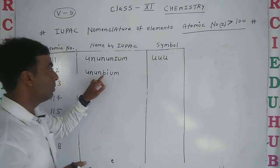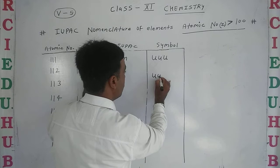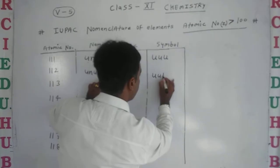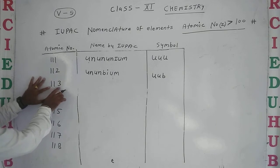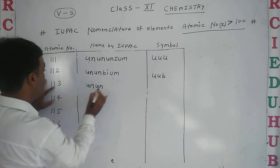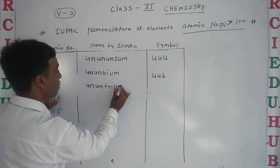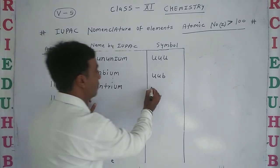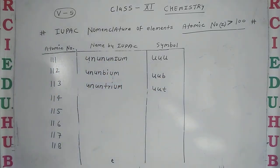First word is U, second U, and third is 2 which uses B. Next, one one three - first is 'un', next 'un', next 'tri'. So it's ununtrium and the symbol will be U U T - Uut.